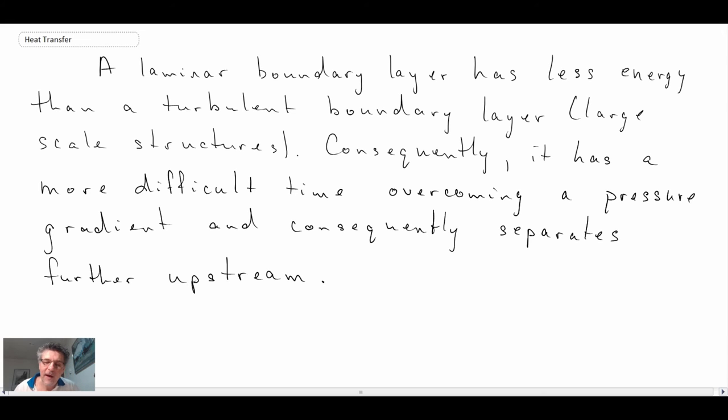So what is happening here is the laminar boundary layer has less energy, or inertia, I guess you could say, than the turbulent boundary layer. We have these large-scale structures, and they are able to overcome the adverse pressure gradient more than the laminar boundary layer. And so the fluid is moving into a region of increasing and increasing pressure. If there's turbulence, it can overcome that more. And that's why we have the separation point further downstream.